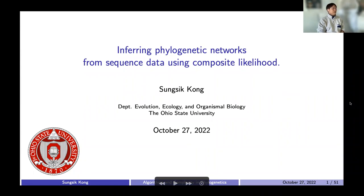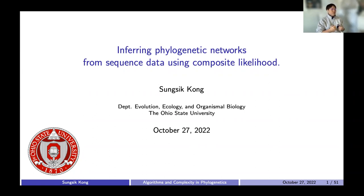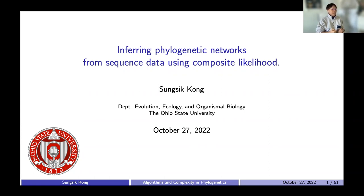My name is Sangshik Hong. I'm a fifth year PhD student at The Ohio State University. First of all, I'd like to thank Christina and Simone for giving me an opportunity to give a talk at today's seminar. The title of my talk is Inferring Phylogenetic Networks from Sequenced Data Using Composite Likelihood. In this talk, I'm going to summarize a number of studies that I have conducted throughout my graduate studies involving phylogenetic networks.